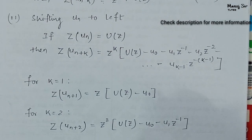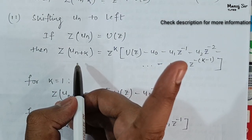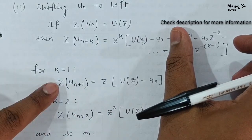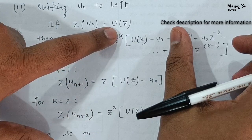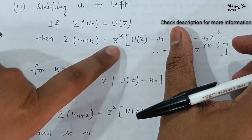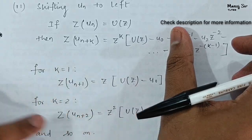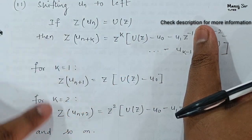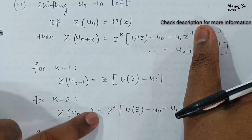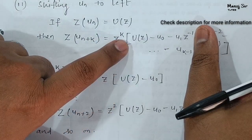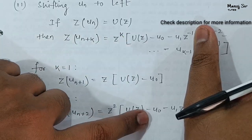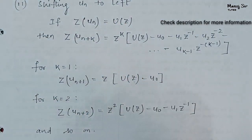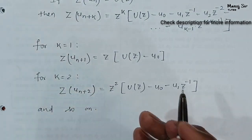If the value of k is 1, then Z transform of u(n plus 1) equals z into U(z) minus u₀. If the value of k is 2, then Z transform of u(n plus 2) equals z squared, multiplied by U(z) minus u₀ minus u₁·z⁻¹. And so on we can find for k equals 3, k equals 4, and so on.